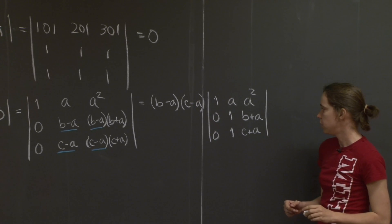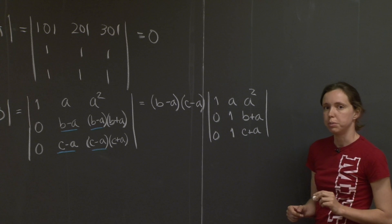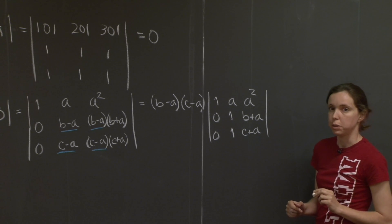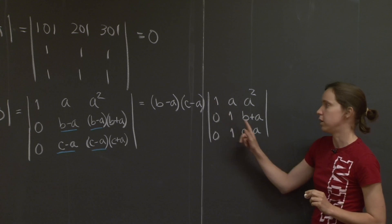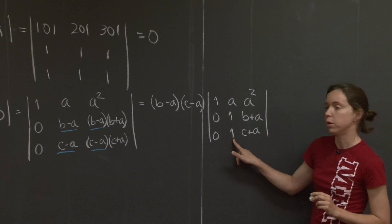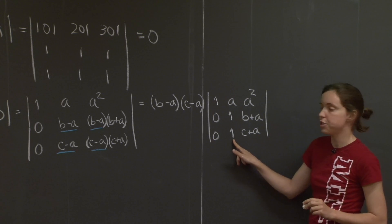Here's one factor from the second row, another factor from the third row, and 1, A, A squared, 0, 1, B plus A, 0, 1, C plus A. Now what? Well, remember you know how to do the determinant of upper triangular matrices, because all that you do is multiply the pivots. This is almost upper triangular, except there's a 1 over here, so let's do another elimination step.